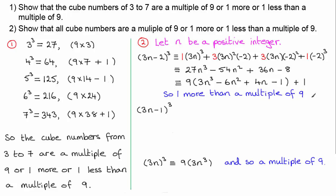You can check this: when n is one you get 1³, which is 9 × 0 + 1. When n is two you get 4³ = 64, which is 9 × 7 + 1 — nine times seven plus the one more. And so on.